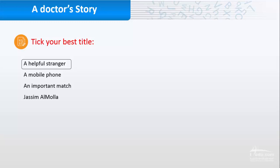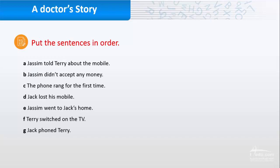Now I want you to put the sentences in order. So we have number one: Jack lost his mobile. Number two: Terry switched on the TV. Three: The phone rang for the first time. Four: Jassim told Terry about the mobile. Five: Jack phoned Terry. Six: Jassim went to Jack's home. Jassim did not accept any money.